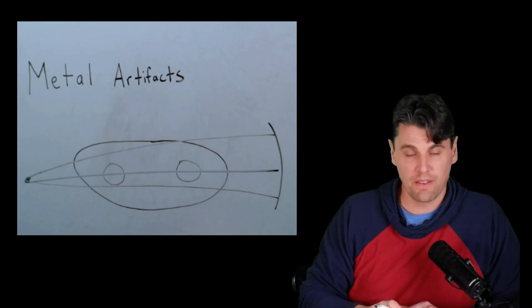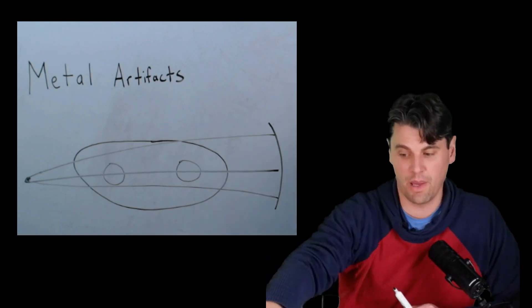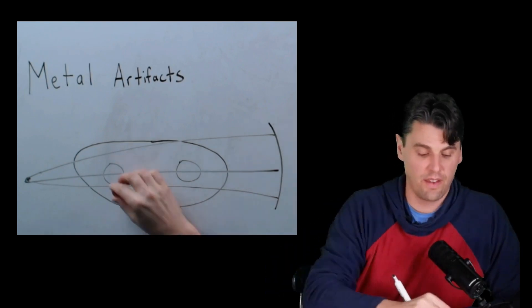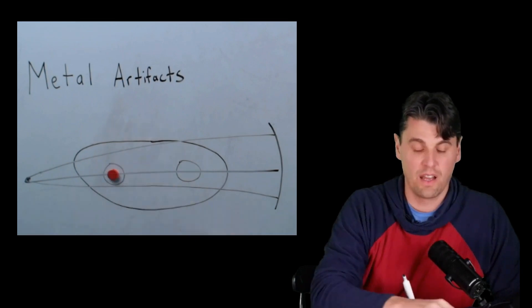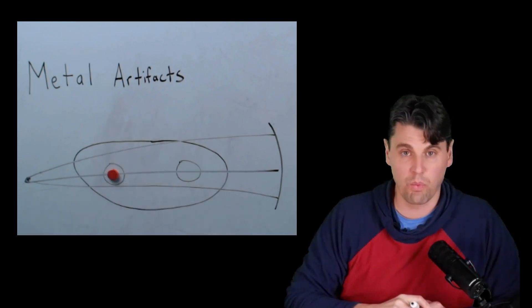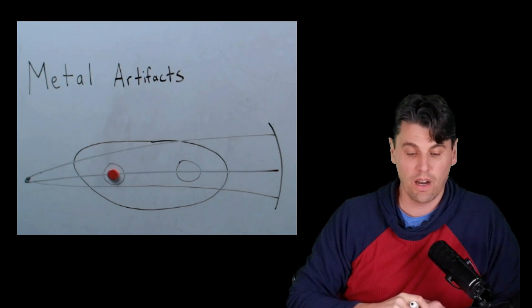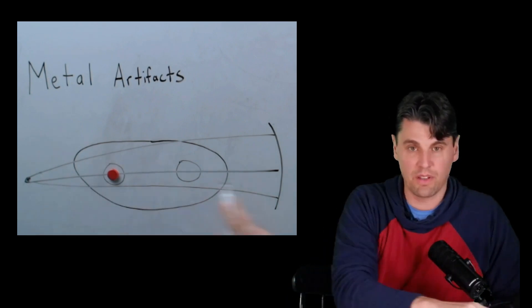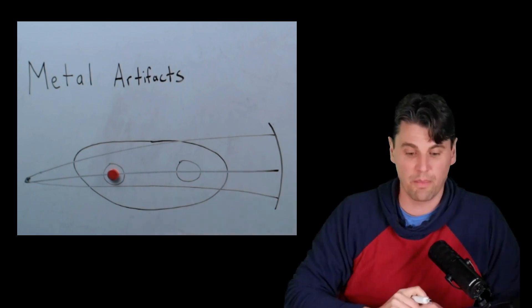And then what happens if you have metal in the patient? So for instance, if this patient had a hip implant in just one of the hips, what are the reasons for metal artifacts? What's going to change in this acquisition between with and without the metal?